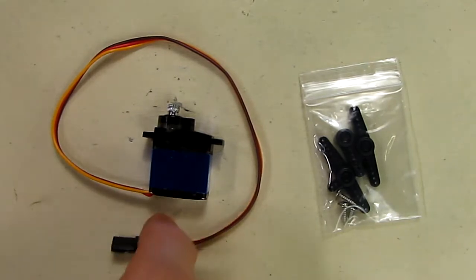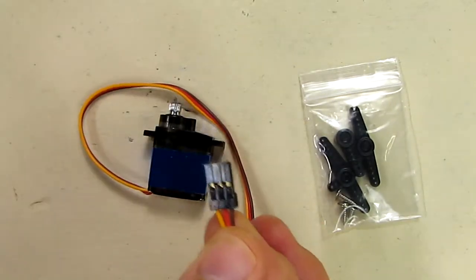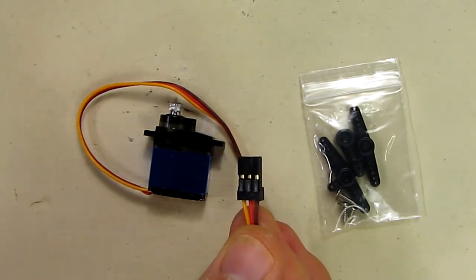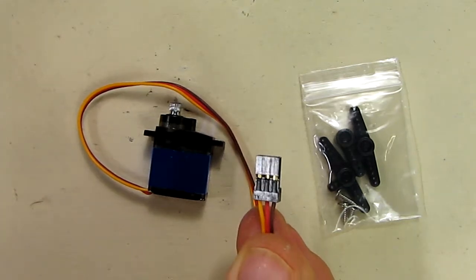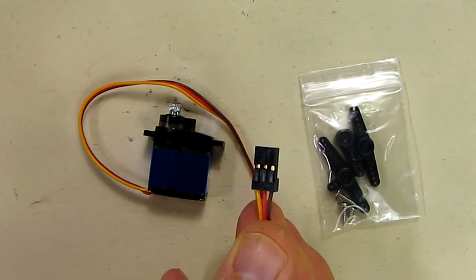Here's the servo itself. It has your typical connector on the back which has brown, red, and orange wires. Brown is the minus, red is the plus, and orange is the signal. This is the universal S connector.